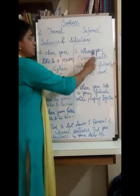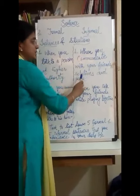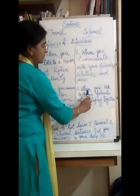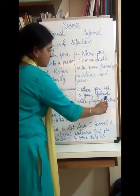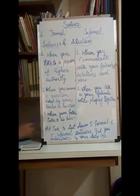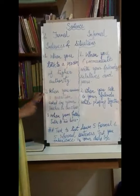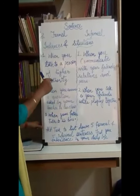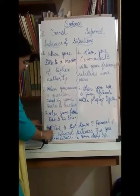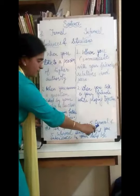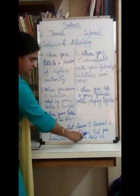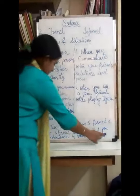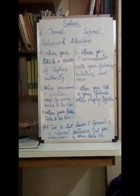For informal instances: the first is when you communicate with your friends, relatives, and peers. The second situation is when you talk to your friends while playing together. Here is a task — please pause the video and note down 5 formal and 5 informal sentences that you experience in your daily life.